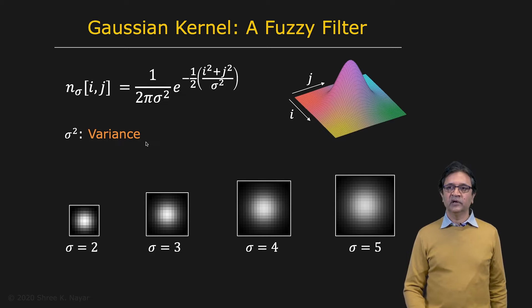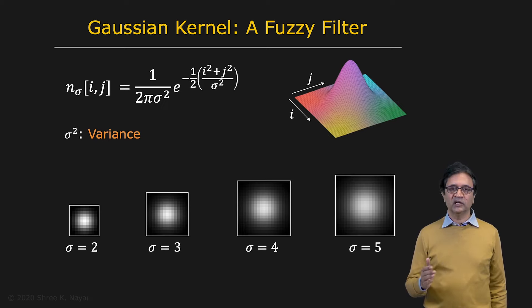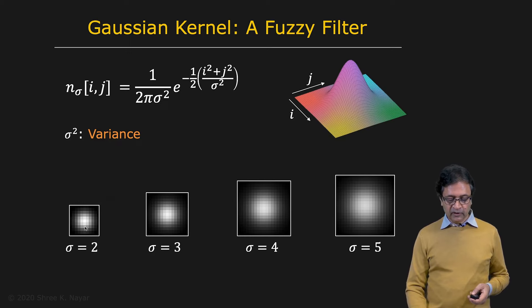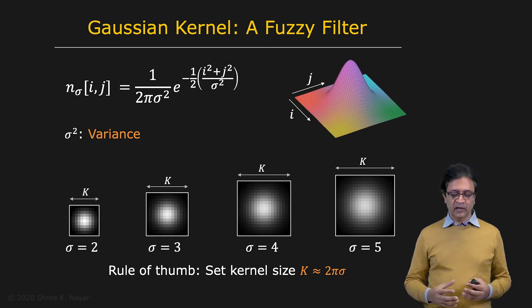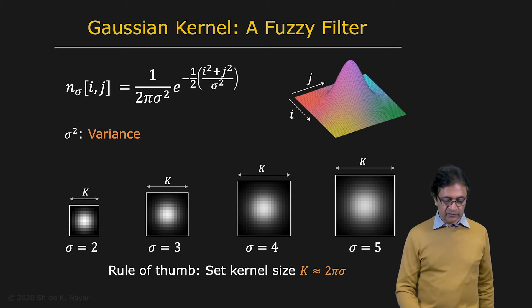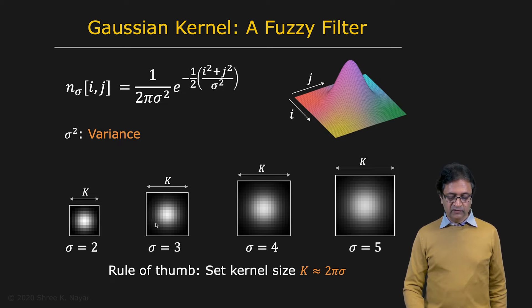So what size for any given sigma, what size mask should you use? This is an interesting question because the Gaussian actually never goes down to zero. It goes to zero at infinity. And that's not the size of a mask that you can afford to use computationally. So as a rule of thumb, what one could do is to say that if the mask is k by k, then k should be roughly equal to 2 sigma. That would capture most of the energy in the Gaussian and most of the interesting shape of the Gaussian itself. So here you see Gaussian masks of different sizes because they have different sigmas.